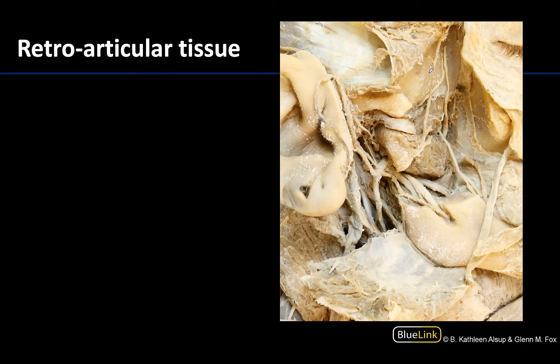Lastly, let's discuss the retroarticular tissue, sometimes referred to as the retrodiscal pad or zone. What I always try to do is find the articular disc, which you can see really beautifully here, and then go posterior to it. You see this area of loose tissue, which contains neurovasculature, and it's going to be posterior to the articular disc, which you can clearly see right in that region. This area is important because it's often a site of edema in temporomandibular joint disorder.